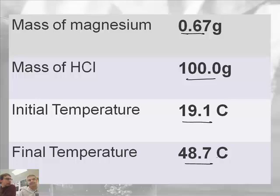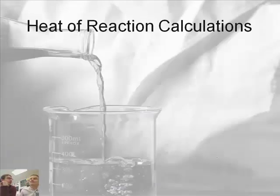So if we want to determine delta H for this reaction, first we need to find Q using MC delta T. Right. And then we're going to divide it by the moles of our limiting reactant. Now, which one of those is our limiting reactant?